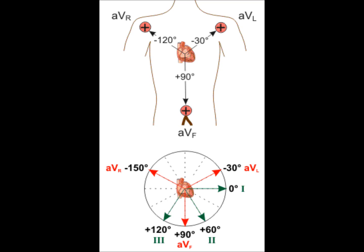Leads 1, 2, 3 make up the standard limb leads. A positive electrode is located at the left wrist in lead 1, while leads 2 and 3 both have their positive electrode located at the left foot.